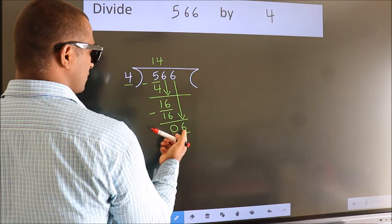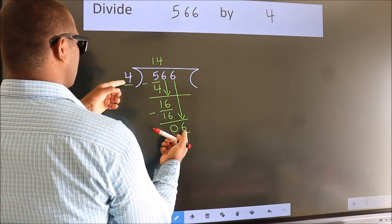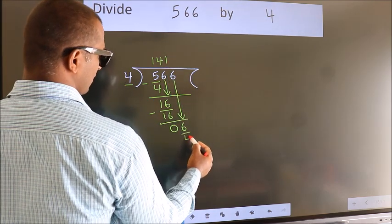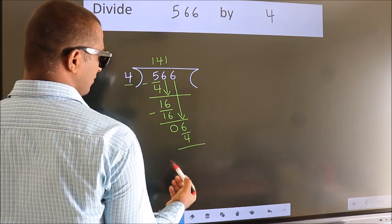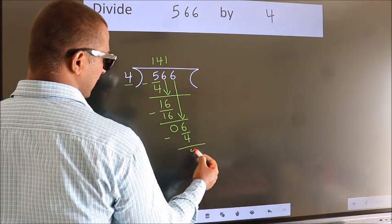A number close to 6 in 4 table is 4 once 4. Now, we subtract. We get 2.